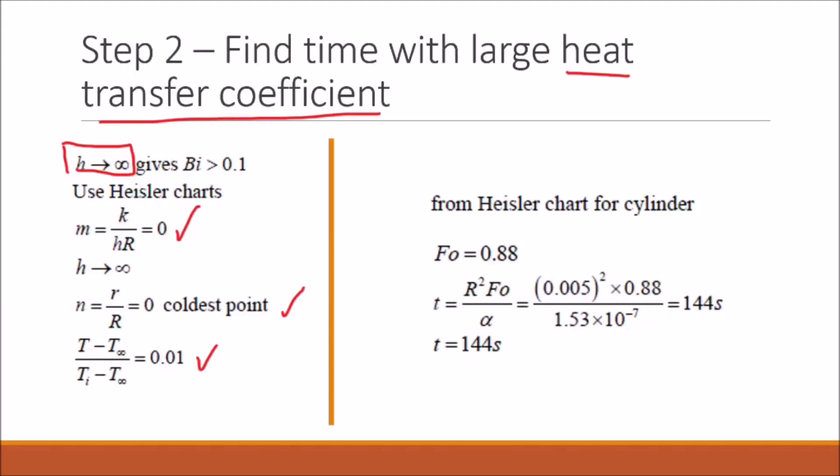Our temperature parameter is constant. Using our Heisler chart, we now find a value for alpha t over r squared as 0.88. Again, solving for t, we find that the time for the coldest point to reach 99% of the total possible temperature increase is 144 seconds, which is significantly less than what it took previously.